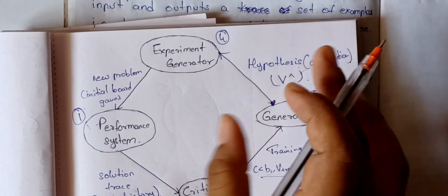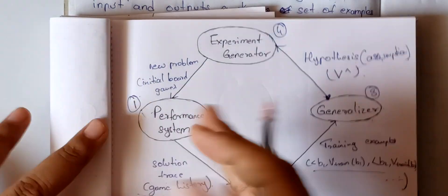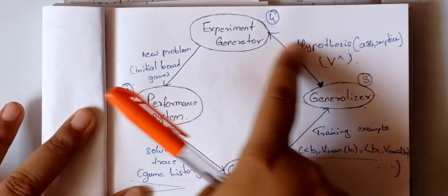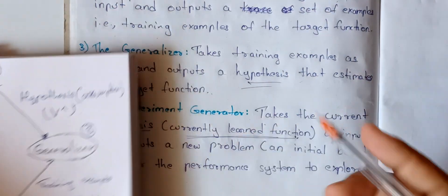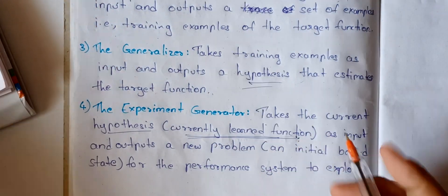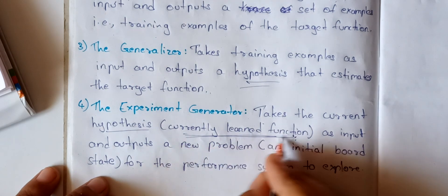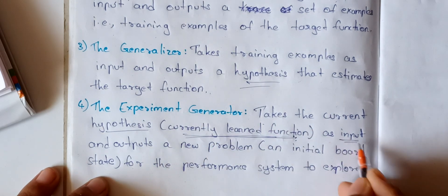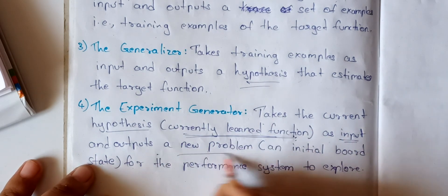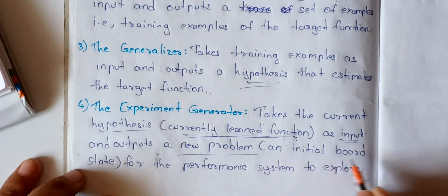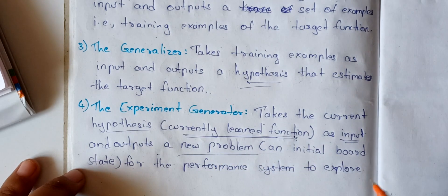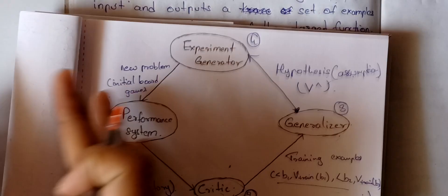Next, the experiment generator takes the current hypothesis — the currently learned function — as input and outputs a new problem: an initial board state for the performance system to explore.